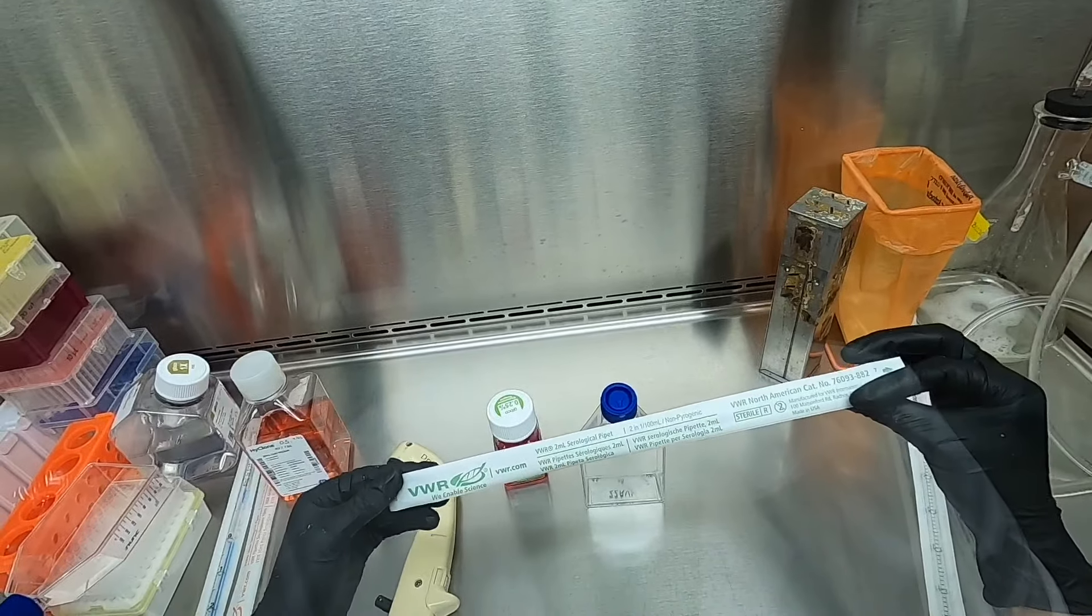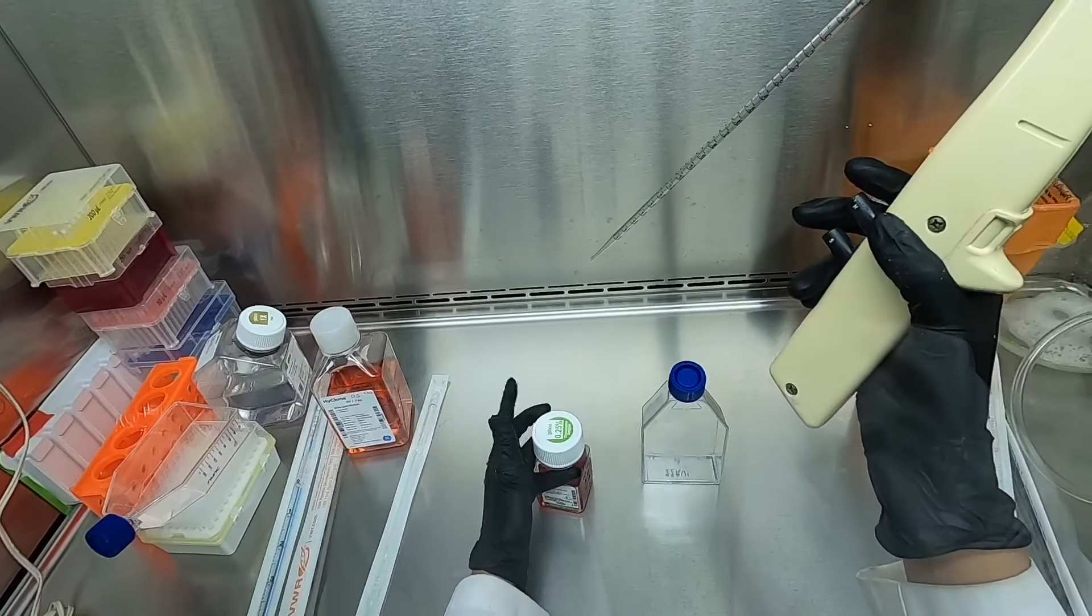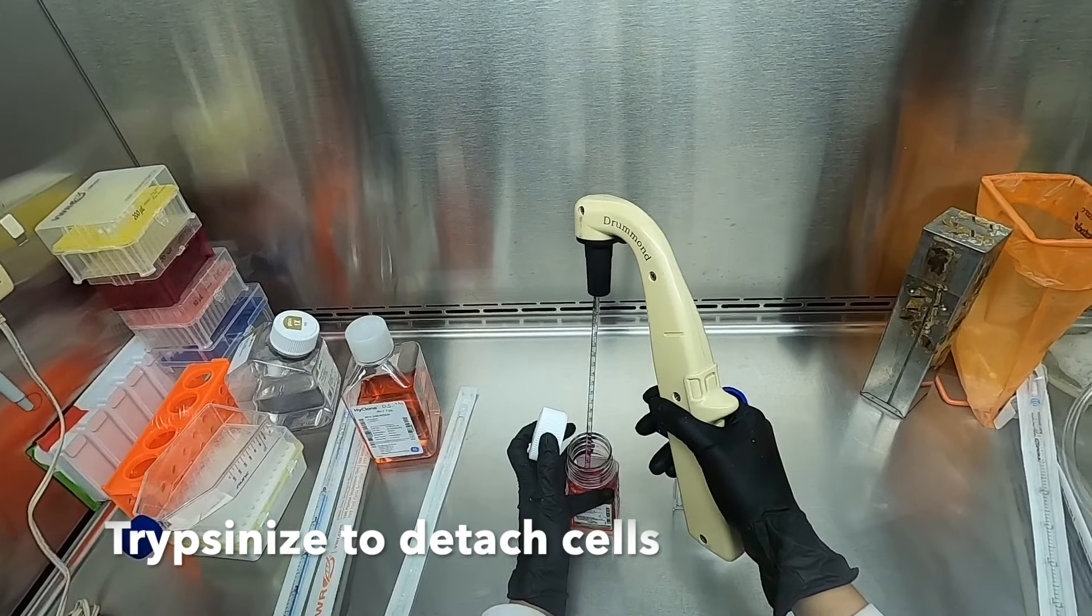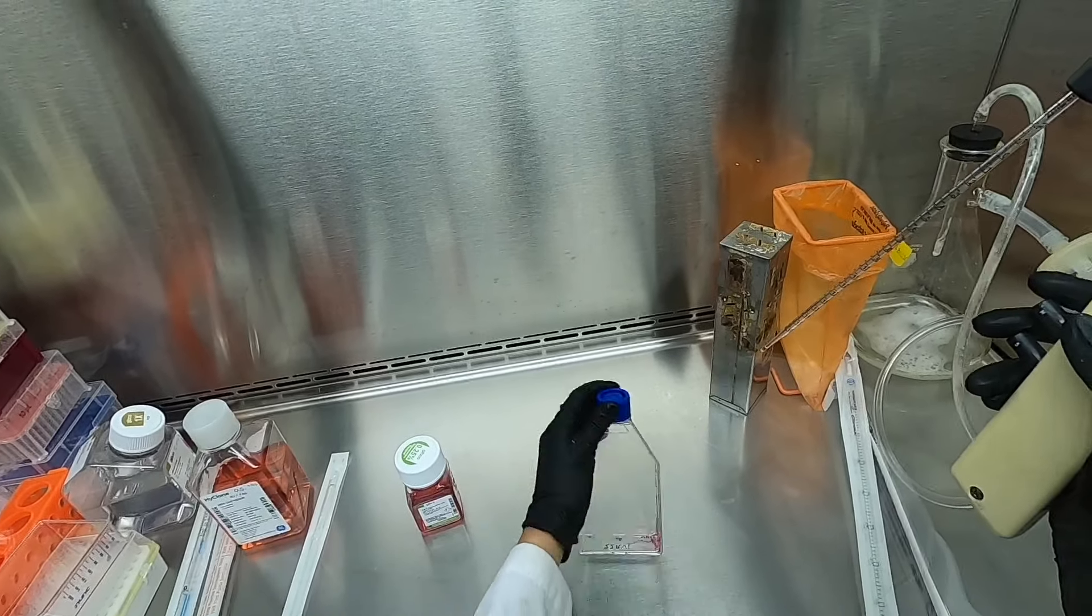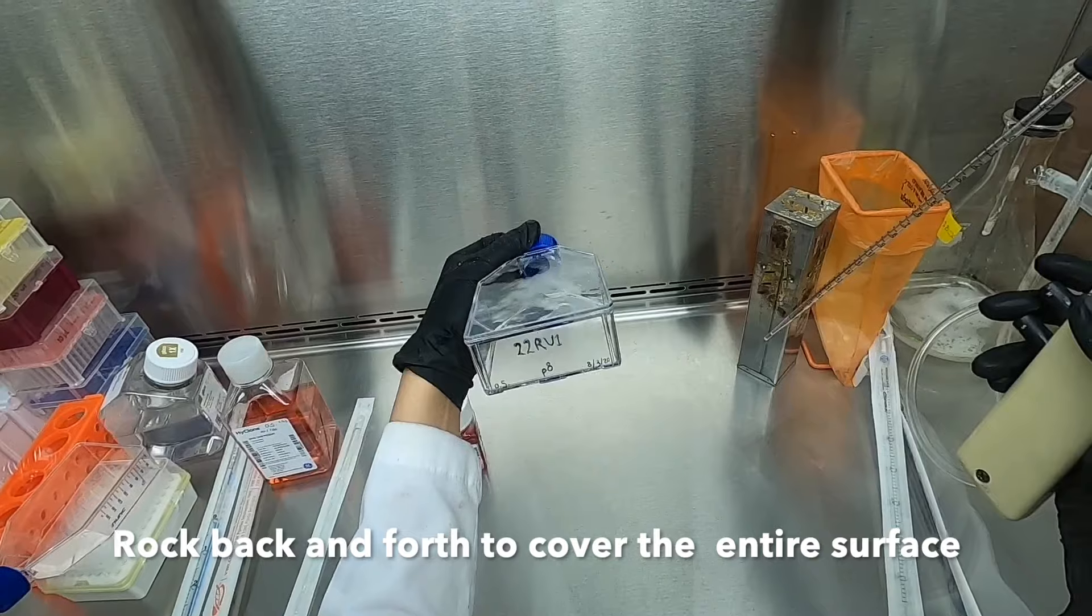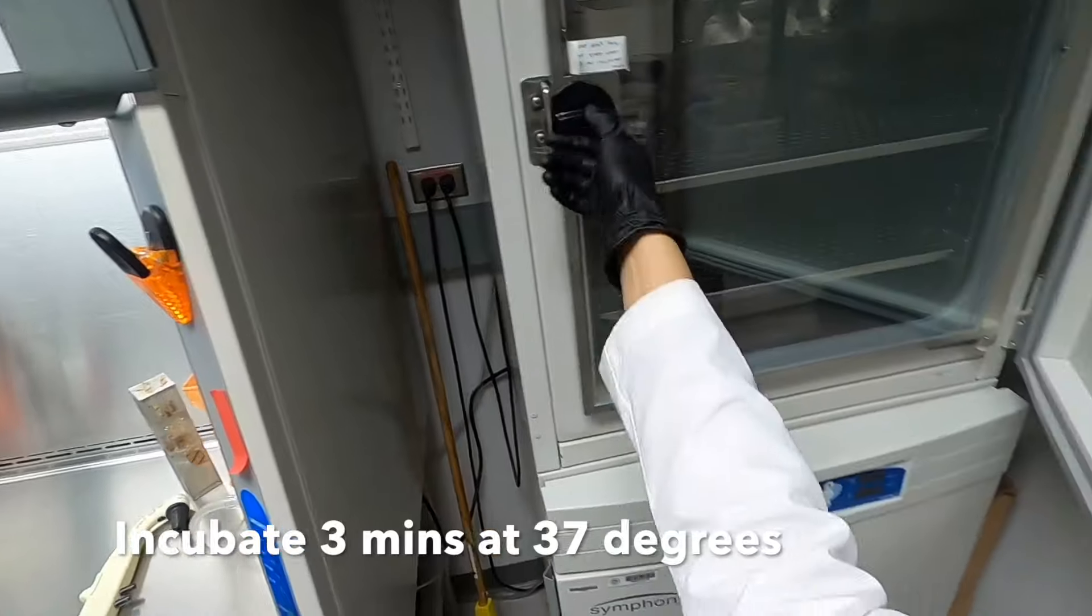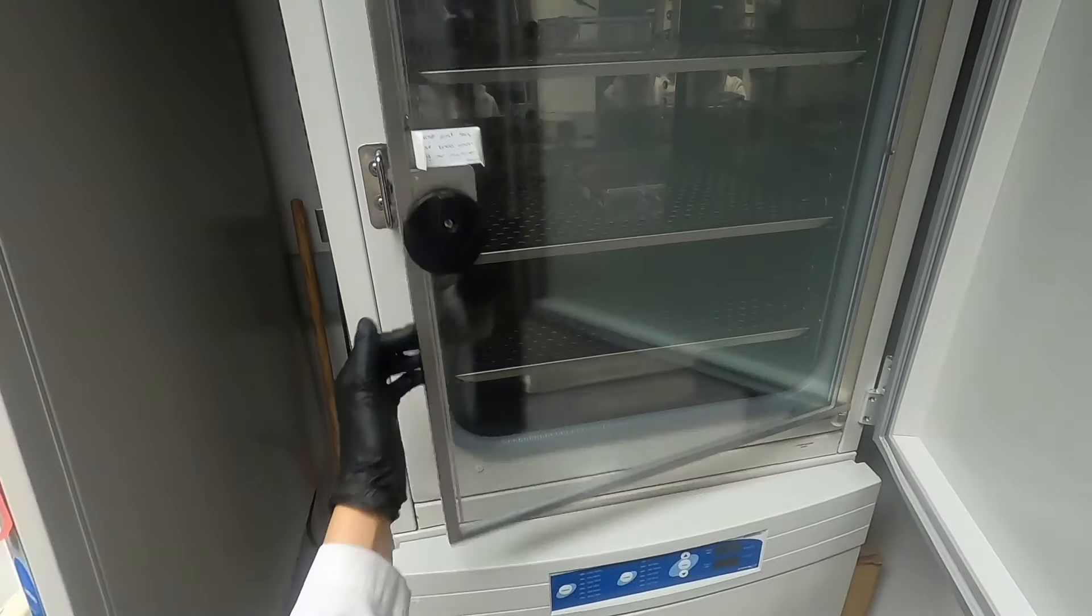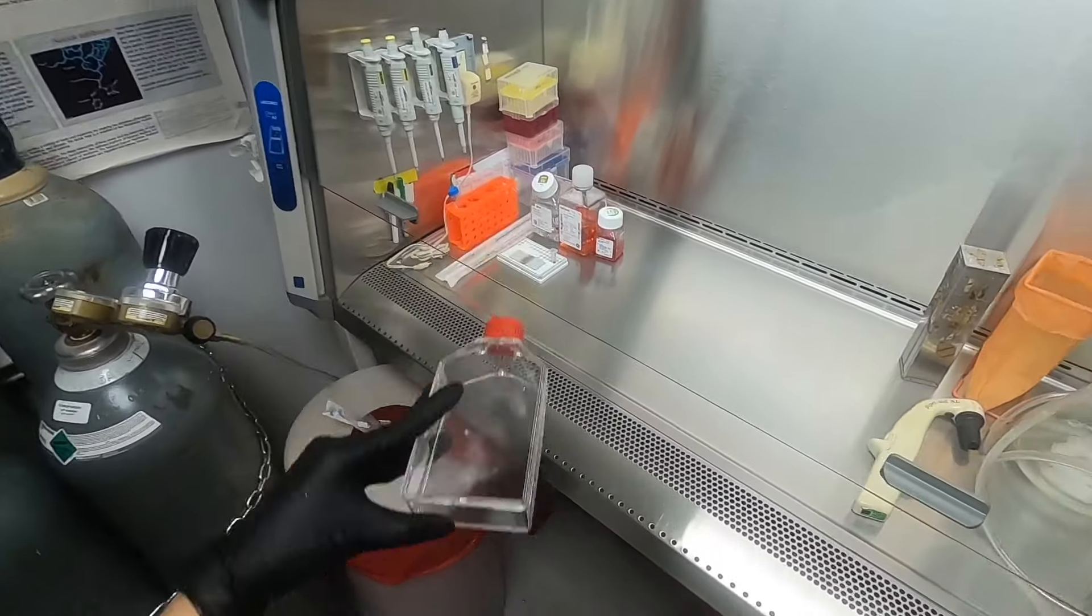Next, we add the pre-warmed trypsin to the side of the flask in order to detach the cells from the plate. The volume of this reagent will also vary depending on the surface area to be covered. We will use just enough trypsin to cover the cell layer. In this case, we will be using 1 ml. The flask will then be incubated at 37 degrees Celsius for approximately 3 minutes. Different cell lines will require different incubation times. It is important to observe the cells under a microscope in order to confirm that the cells are being released. Cells that have been detached will also slide if you tilt the flask.